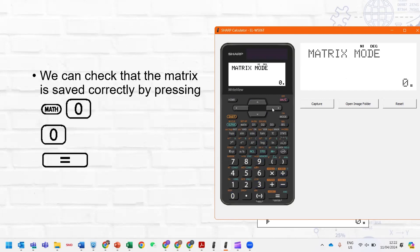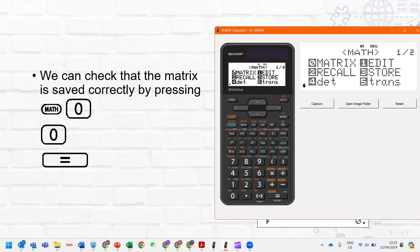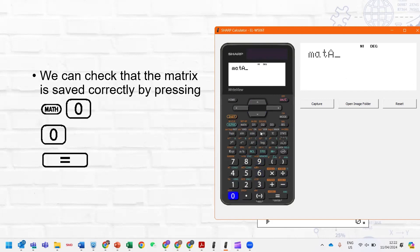All right, now we can check that we've saved our matrix correctly by finding the matrix. So we're going to press Math, choose zero for matrix, and then zero for matrix A, and we can just press equals to see that our matrix is in fact stored in matrix A.